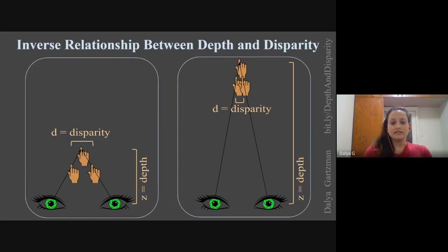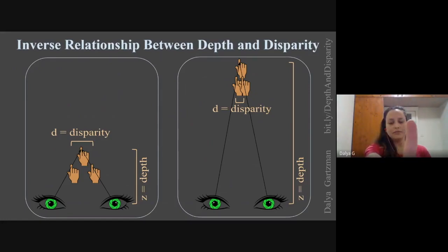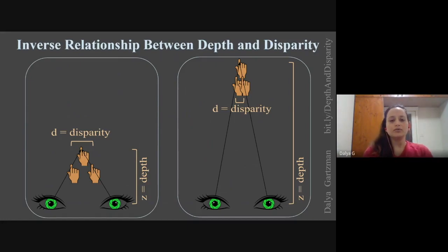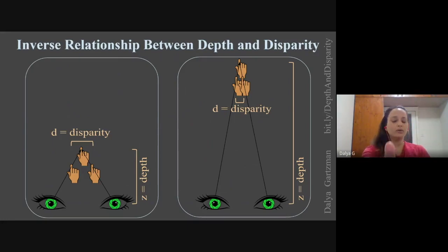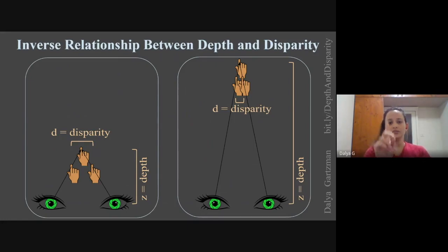Let's call the distance between our eyes and the finger the depth. And the distance between the two locations of the finger we will call disparity. What we observe is that there is an inverse relationship between depth and disparity.